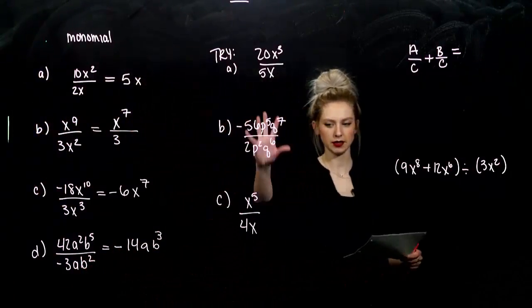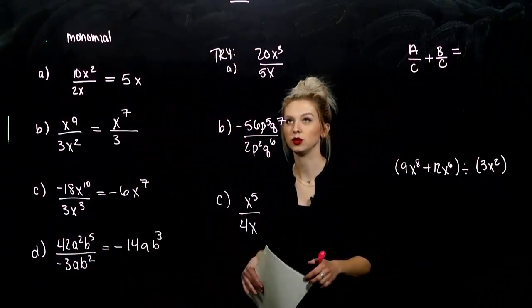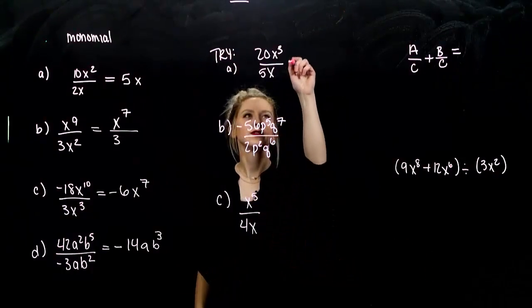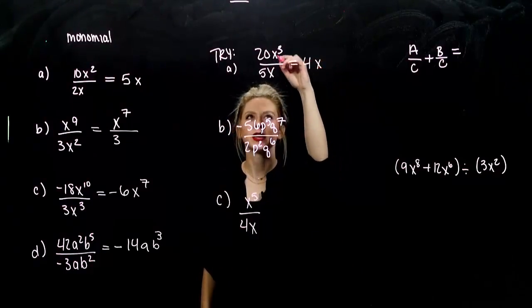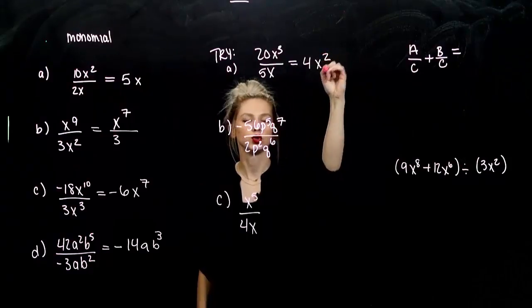So, go ahead and take these 3 and simplify them. See what you get. Do the division. For the first, 20 divided by 5 gives me 4. How many x's? 3 minus 1. 2.